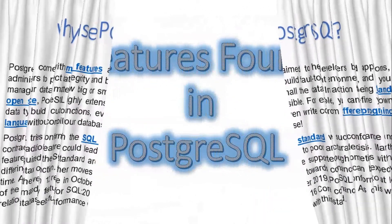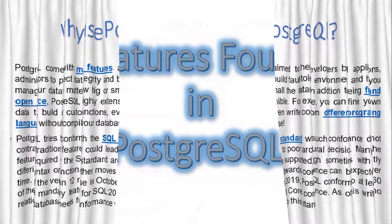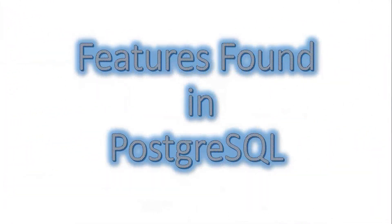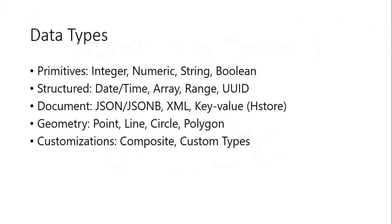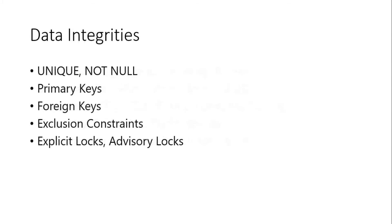To the main features found in PGSQL: there are data types — we have primitive, structured, document, geometry, and customizations. Then there is data integrity: there is unique, not null, primary keys, foreign keys, exclusion constraints, explicit locks, and advisory locks.